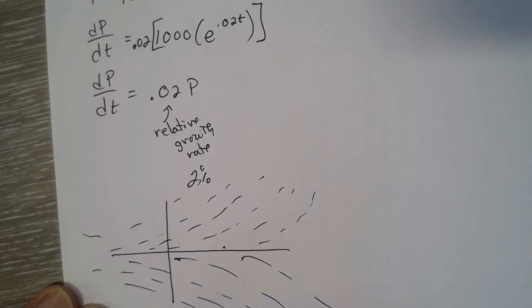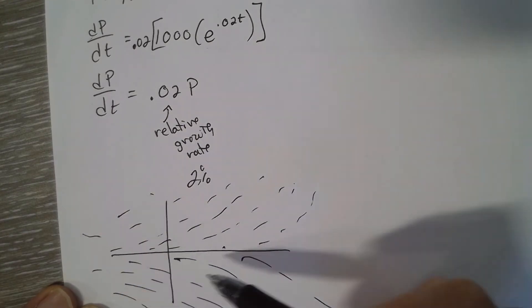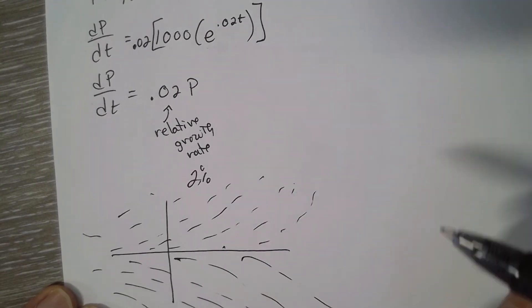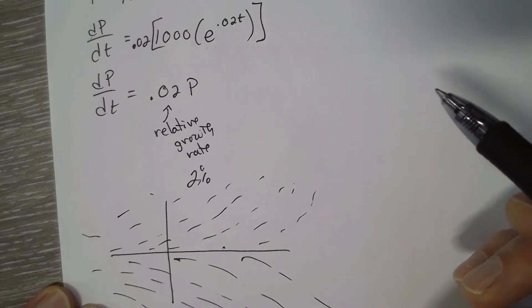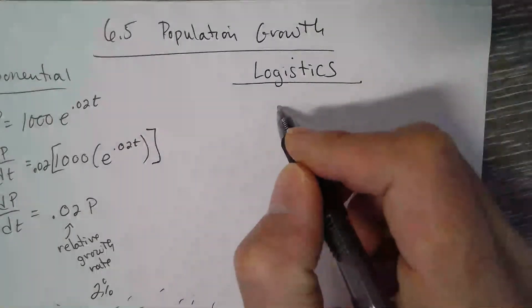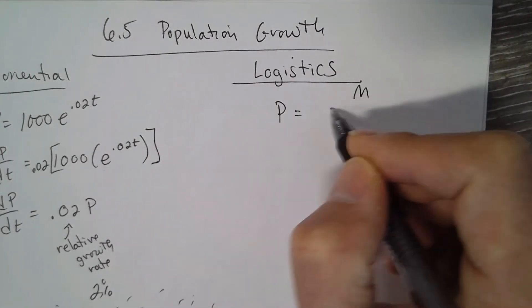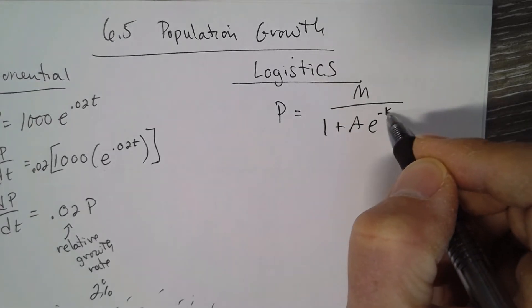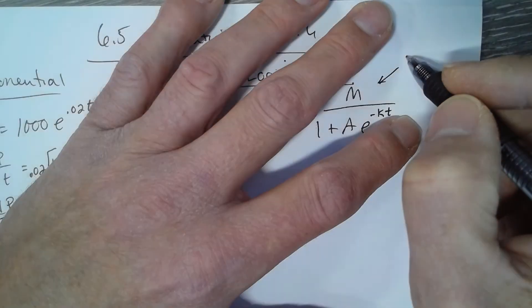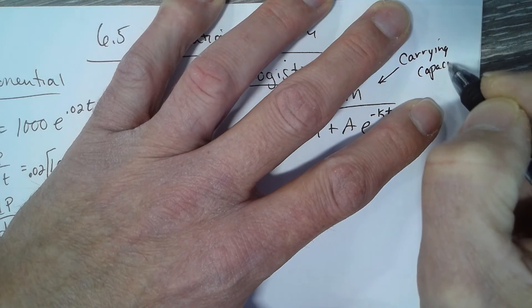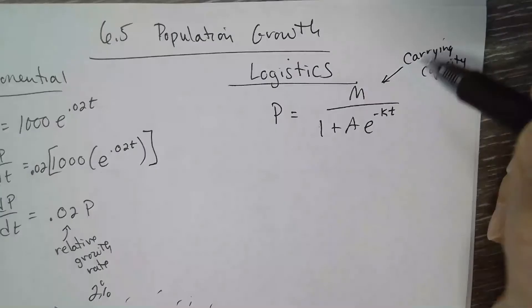So kind of like that would be a population growth representation exponentially. The other is logistics. So the general formula for logistics is population equals M, which represents the maximum or the carrying capacity—the maximum that the population can reach.